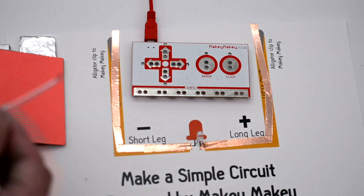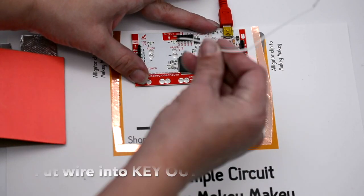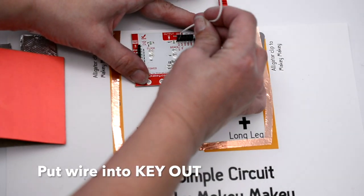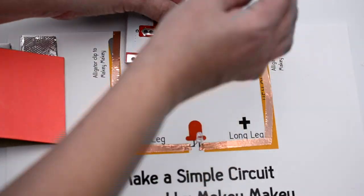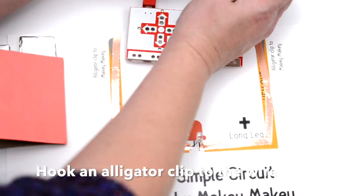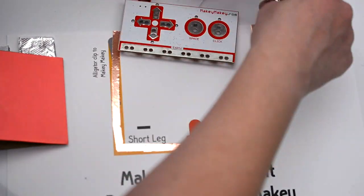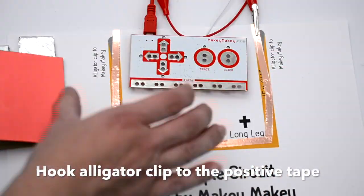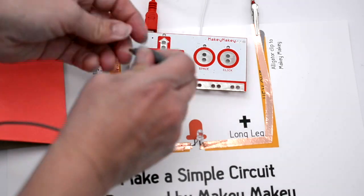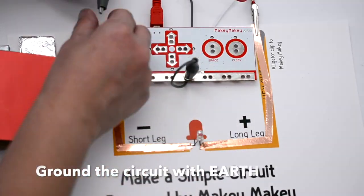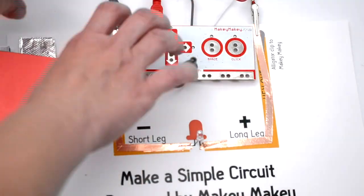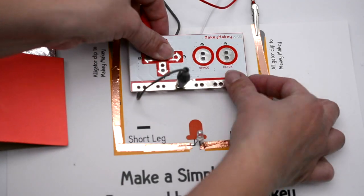Now we're ready to connect our Makey Makey. Grab a short white jumper wire and you're going to place this wire into key out, which is the far left pin on the back header. And then you're going to hook an alligator clip to this wire and hook that to the key out positive tape trace on your template. Now to ground your connection, you're going to take another alligator clip to earth and clip that to the negative side.